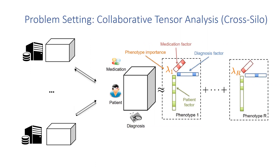Given our distributed data, the goal of collaborative tensor factorization is to obtain the global feature factors while keeping both the data and the patient factors private at each local site.